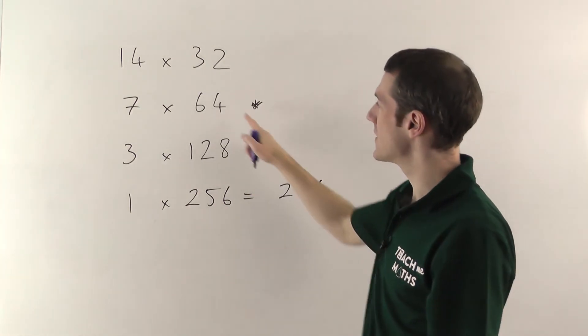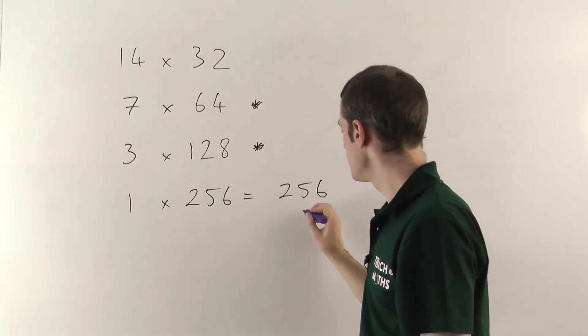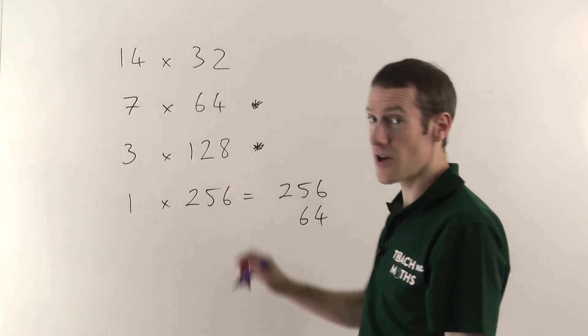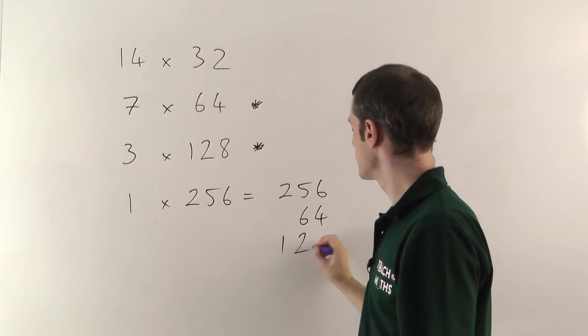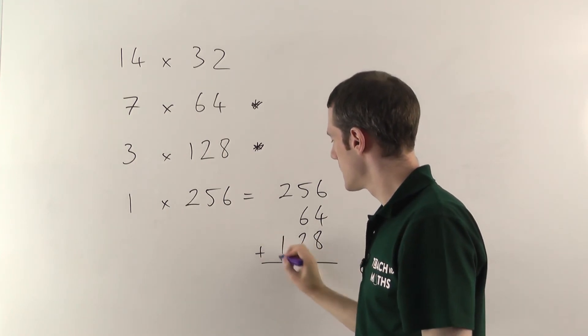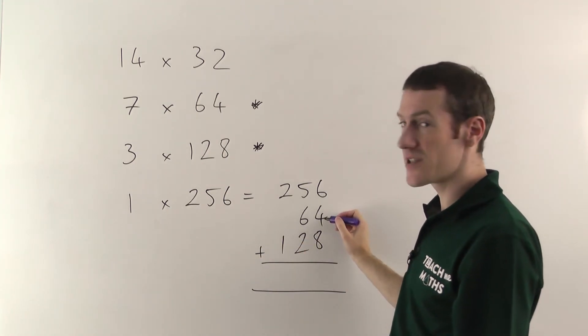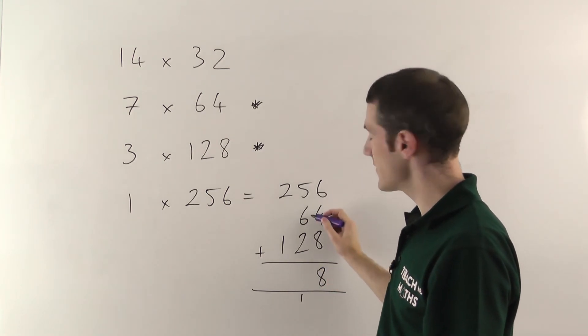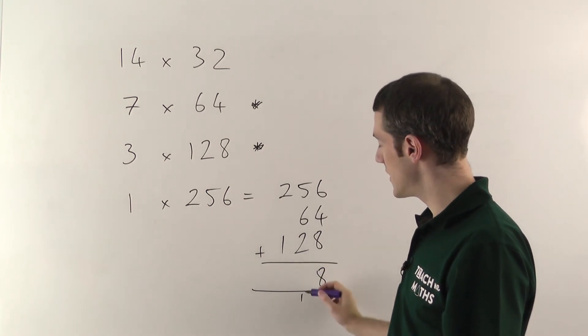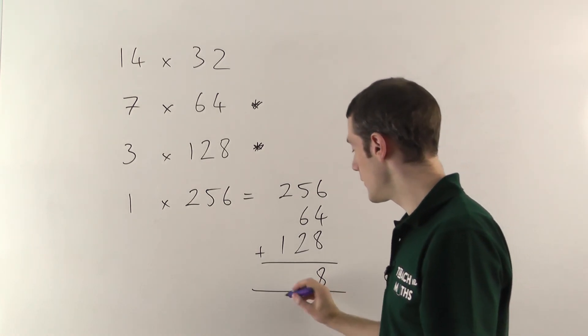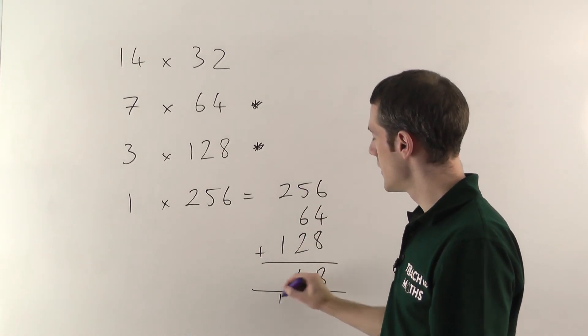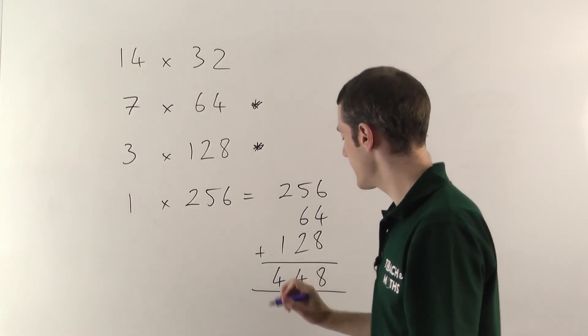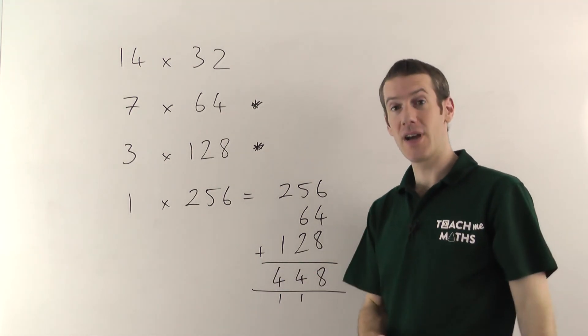So it's going to be 256 plus 64 plus 128. So that goes like that. 6 plus 4 is 10, plus 8 gives you 18, carry the 1. 5 and 6 is 11, plus 2 is 13, plus the one you carry gives you 14, carry the 1. And 2 plus 1, plus the other one, gives you 4. So the final answer is 448.